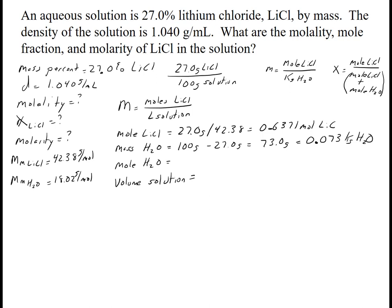For the moles of water, now that I have the mass of water I take 73.0 grams divided by 18.02 and get 4.051 moles of water.